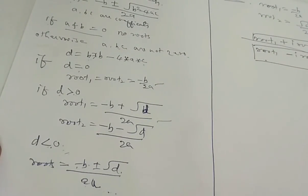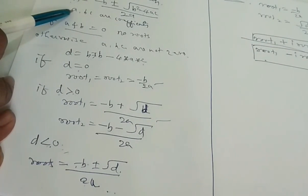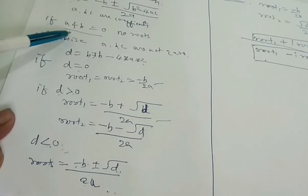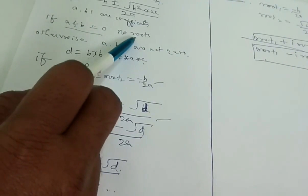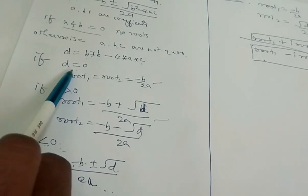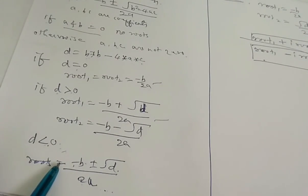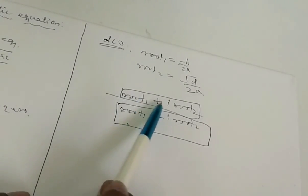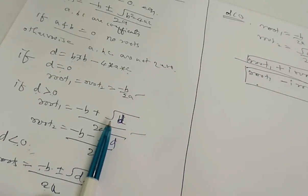This is the procedure or algorithm to write the C program. First, we read the A, B, C values. Then we check if A and B are 0 — if so, we cannot find the roots. Otherwise, we calculate D as B squared minus 4AC. If D equals 0, roots are equal; if D is greater than 0, roots are distinct; if D is less than 0, roots are imaginary.